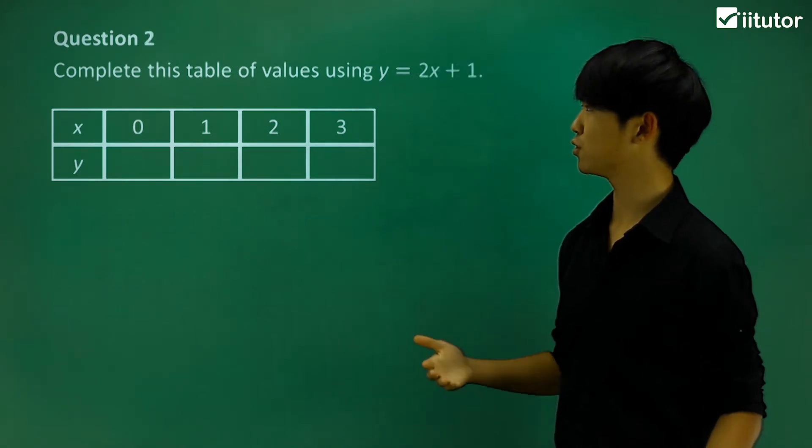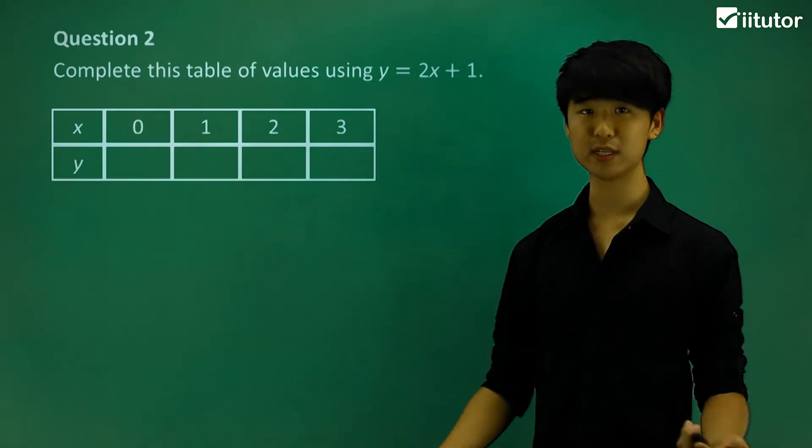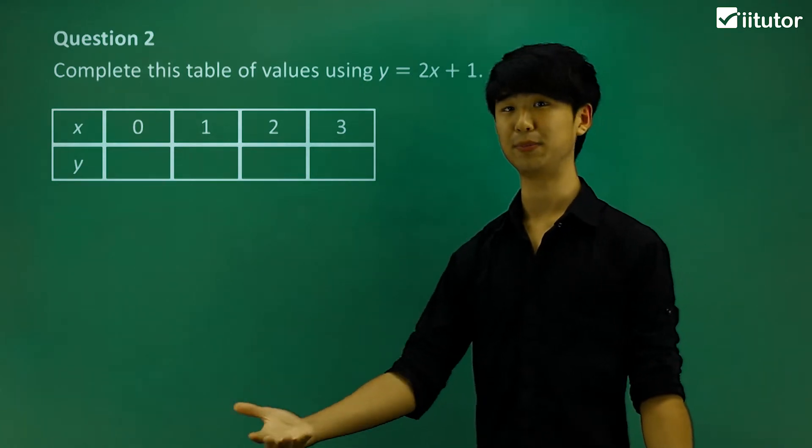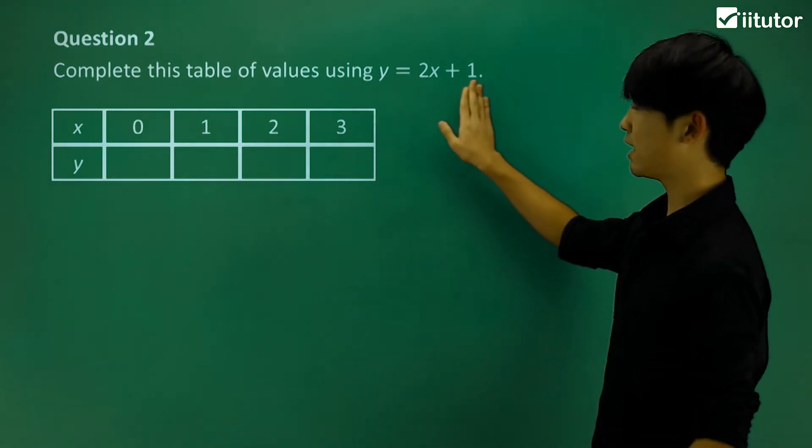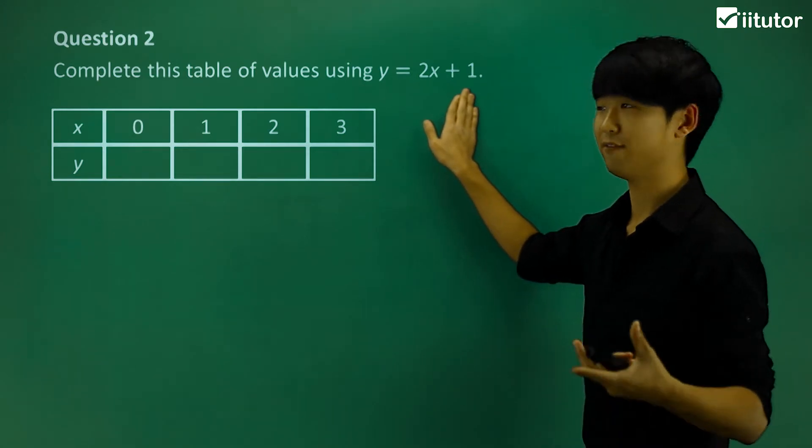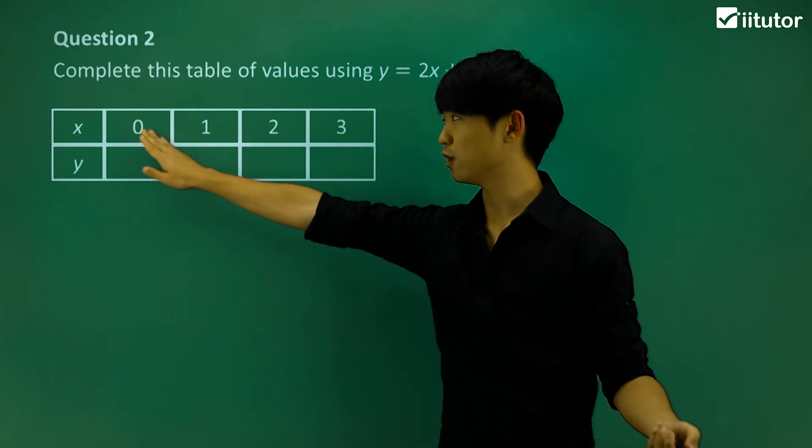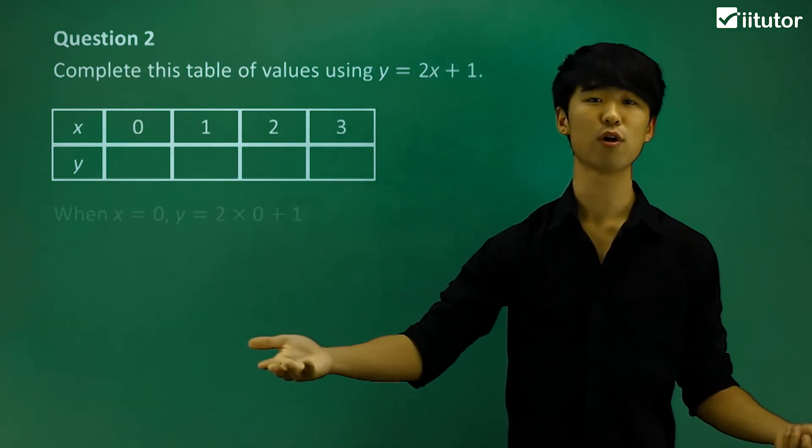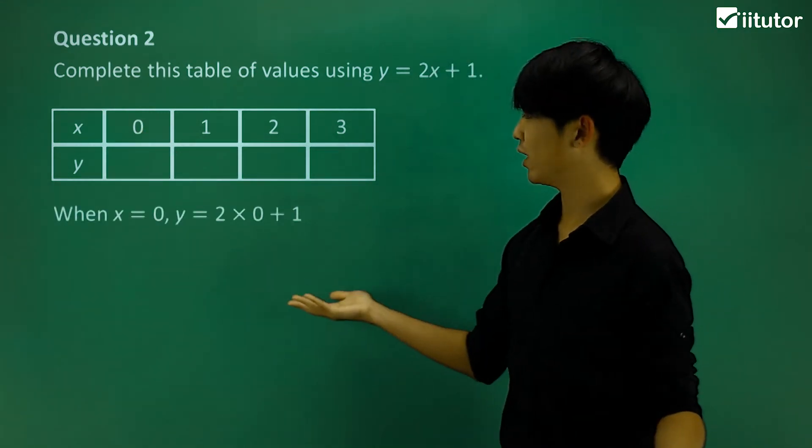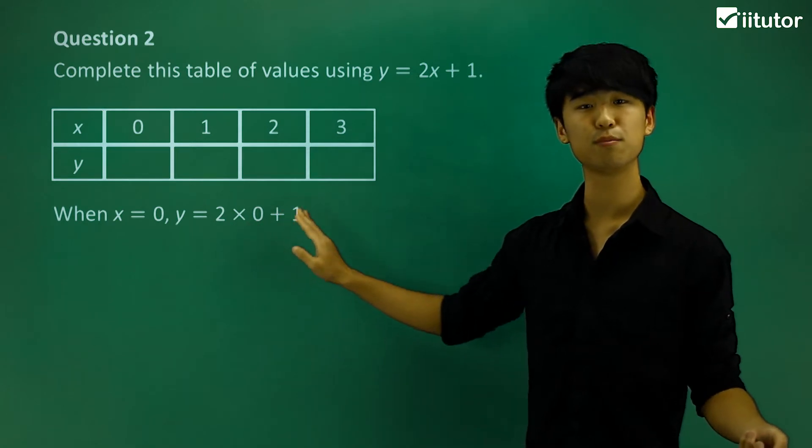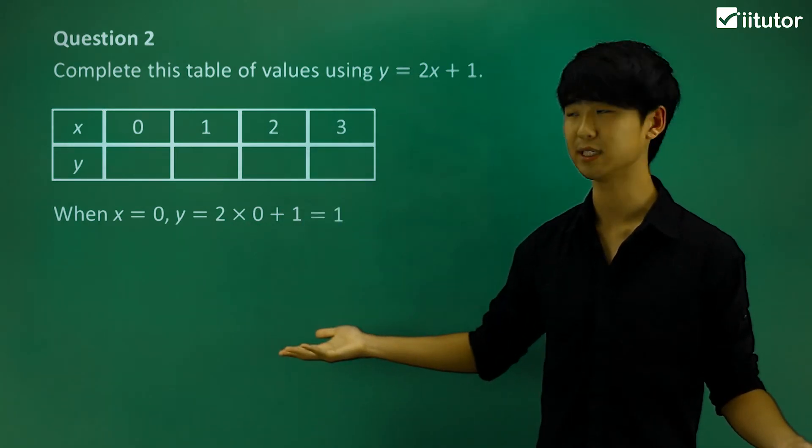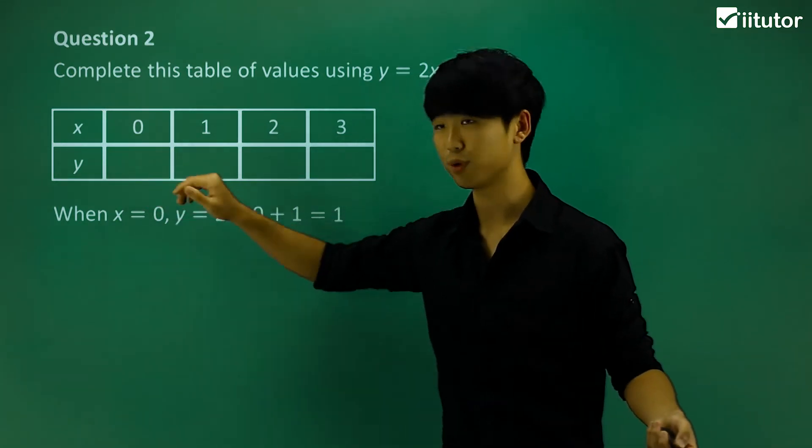Let's move on to question number 2. We're going to be doing the same thing. We're going to be completing the table of values. But the only difference is that we have a different relationship, or we have different equations. So we're going to do the same thing. We're going to start off with x equals 0. When x equals 0, y should equal 2 multiplied by 0 plus 1, which equals just 1. Make sure you put it into the table there.